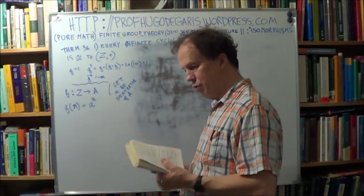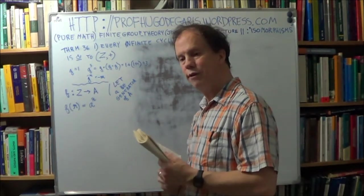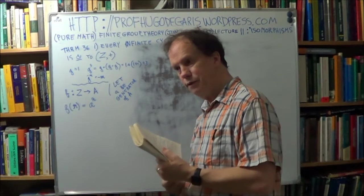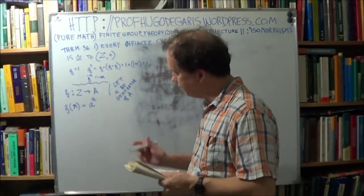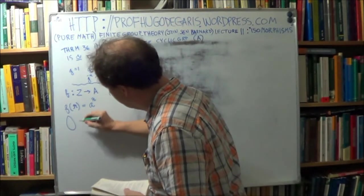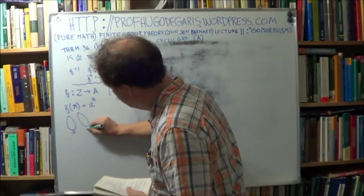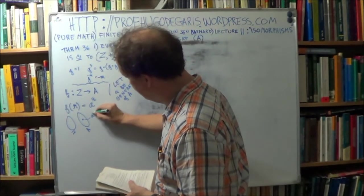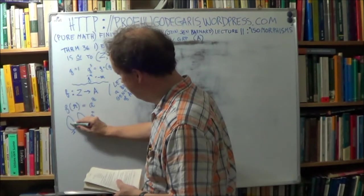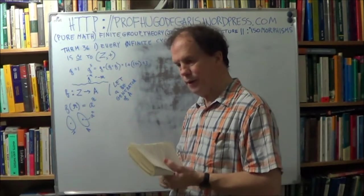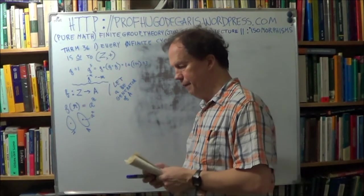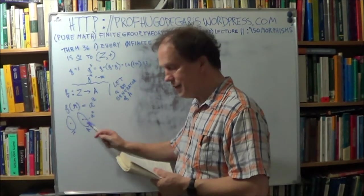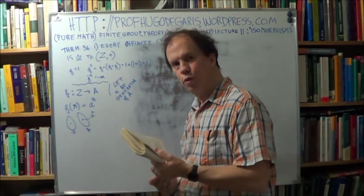Alright. Okay, so now we have to prove that this F is a bijective function. And to do that, of course, we have to prove the two parts, that it's injective and surjective. So here's your Z, here's your A, here's an arbitrary element. Let's call it A to the R, right? Now, to prove, let's do surjective. It's probably easier.